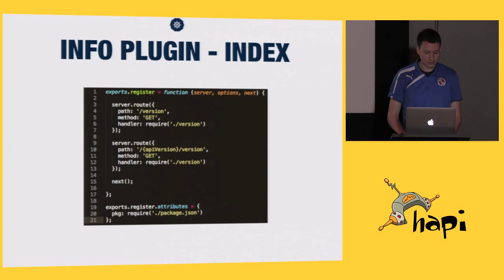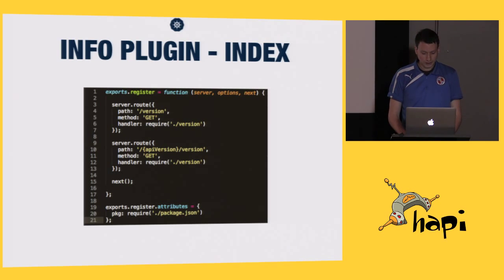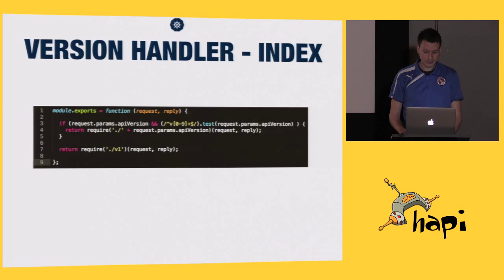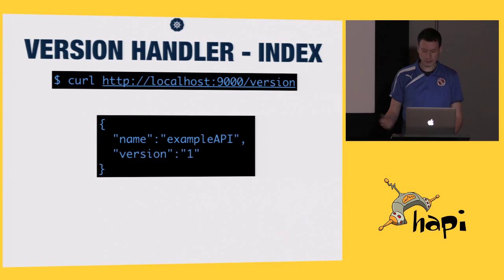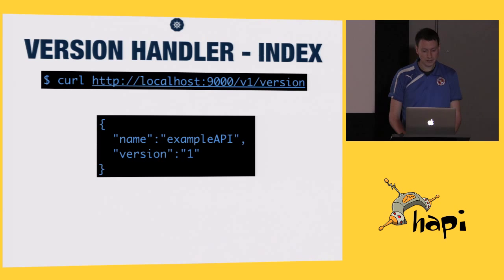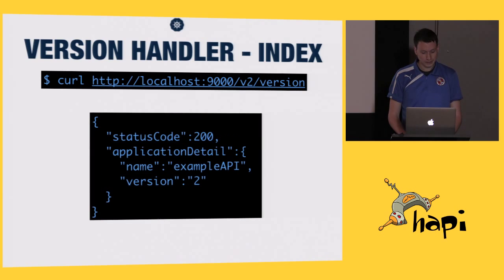The info plugin now has a slight change — we've added in another route which has the API version specified, and that's the only change we do there. We leave the version still pointing to this version handler that we just saw. So once we have this set up, testing on this URL parameter — if we curl as we did before, we get the same response, so we're not breaking anything for anybody else. But if we put in V1 as our API version parameter, we get the same response because the default is version 1. Then we change it to version 2, and now our response is from the other handler.